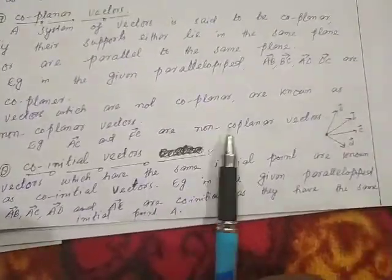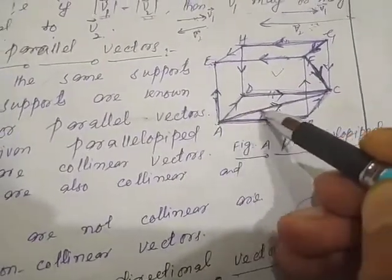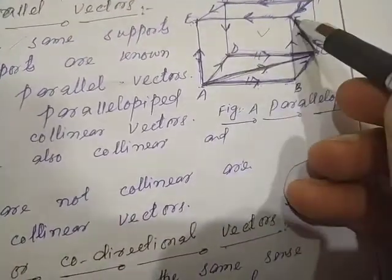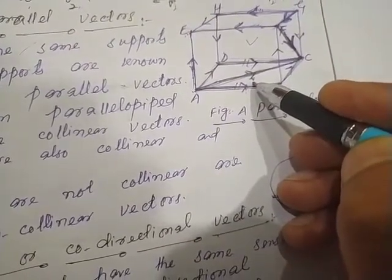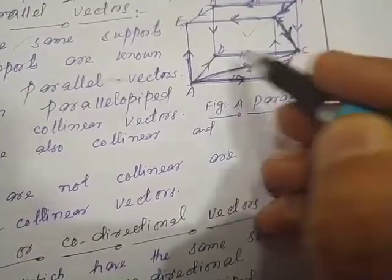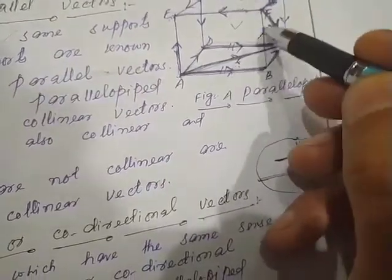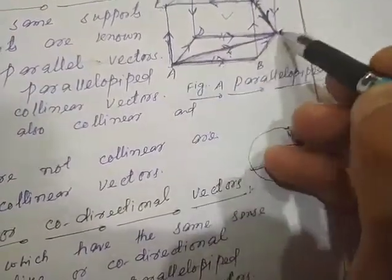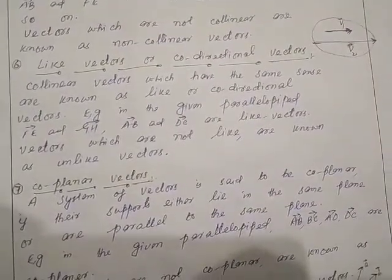For example, AC and FC are non-coplanar vectors. We can see that AC vector lies in the ABCD plane and FC vector lies in the BCGF plane. These two planes are not parallel to each other, so AC vector and FC vector are not in one plane or parallel planes — that is why we say these two vectors are non-coplanar vectors.